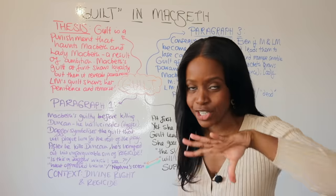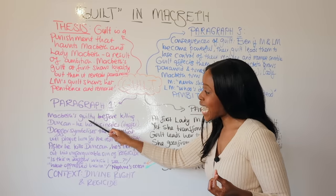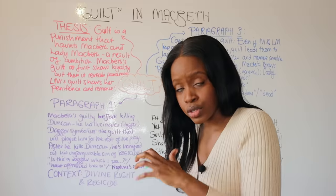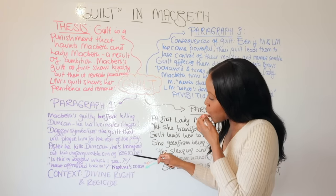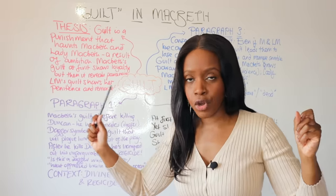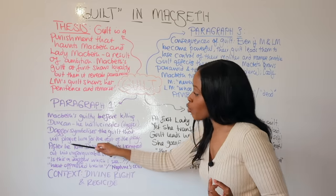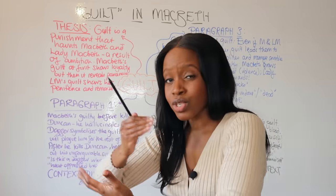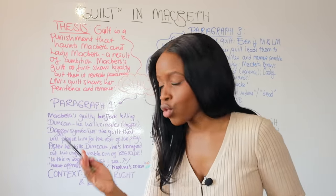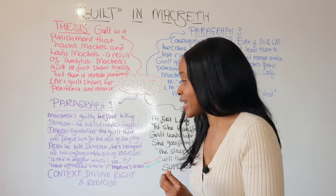Your first main body paragraph focuses on Macbeth, the titular character. Make it clear that Macbeth feels intense guilt before killing King Duncan, illustrated through his hallucination of the supernatural floating dagger in Act 2 Scene 1. This dagger symbolizes the murder of King Duncan and also the guilt that will follow and plague Macbeth for the rest of the play, corrupting him from a celebrated brave general into a fallen tyrannical hero.